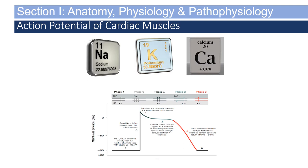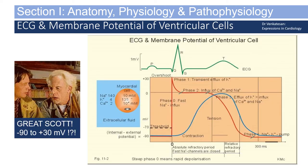We can't get through anatomy, physiology, and pathophysiology of the heart without talking about the action potential of cardiac muscles and the importance of sodium, potassium, and calcium. Although you don't need to memorize every phase, it is important to understand that there is an influx and efflux of sodium, potassium, and calcium that drives this action potential. Changes in the EKG will appear based upon these action potentials.